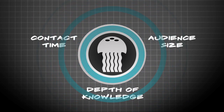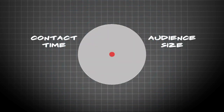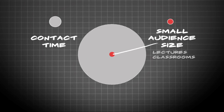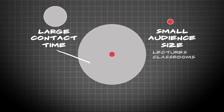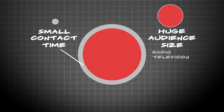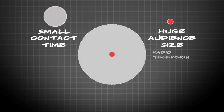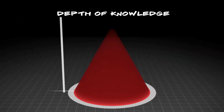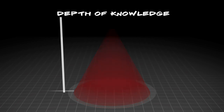Three variables you'll be thinking about are contact time, audience size, and depth of knowledge. Let's look at contact time and audience size first. With relatively small audiences, like a lecture or a formal classroom setting, you have a lot of time to talk about interesting jelly phenomena — small audience, lots of contact time. But on the radio or television, which reaches a huge audience, you may only have a few minutes for some major jelly facts — huge audience, small contact time. As you can see, they're inversely proportional.